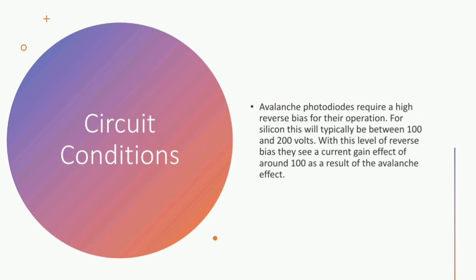With this level of reverse bias, they see a current gain effect of around 100 as a result of the avalanche effect.